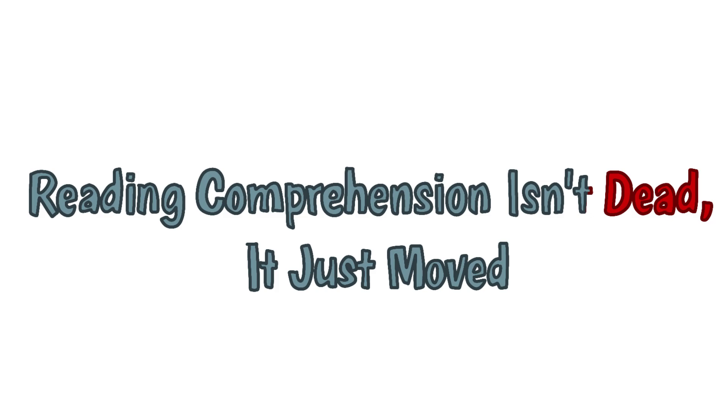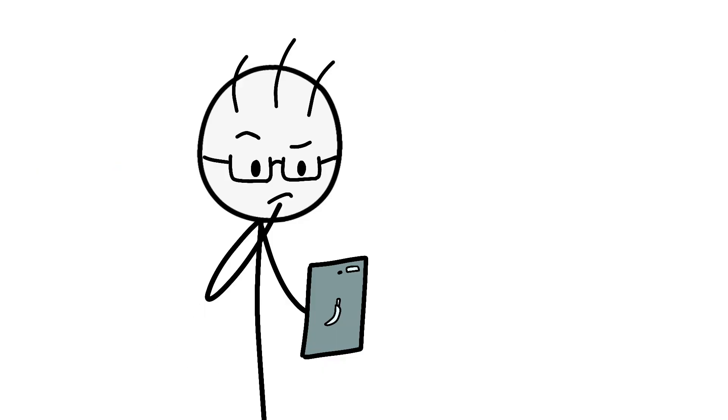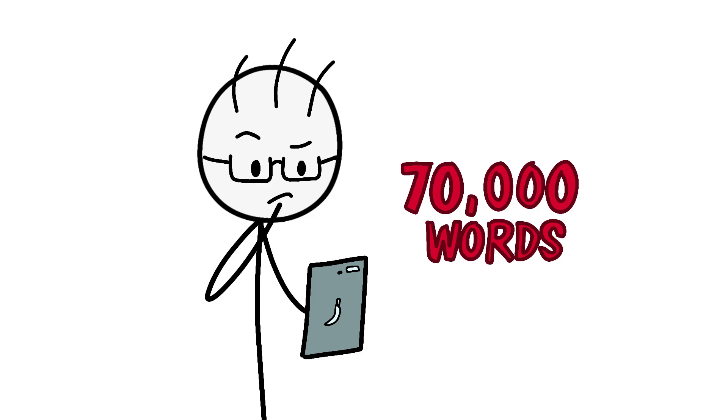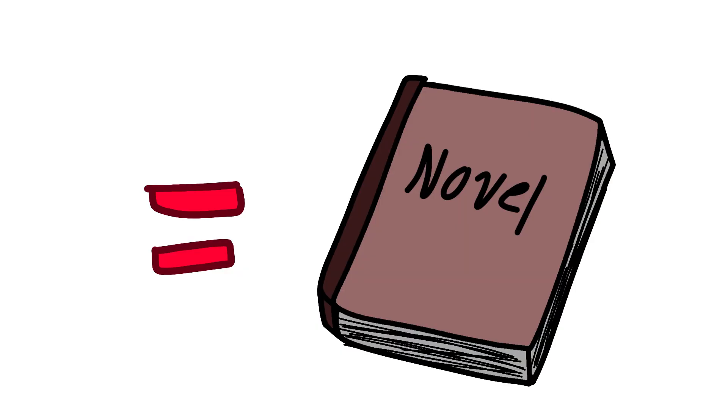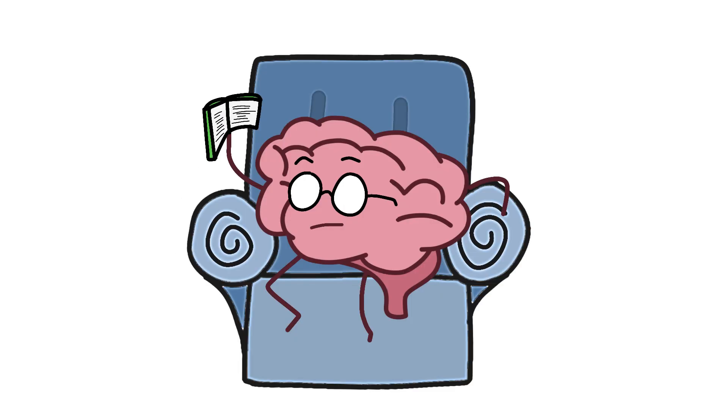Reading comprehension isn't dead, it just moved. Kids don't read anymore. Meanwhile, the average teenager reads 70,000 words per day through texts, posts, and articles. That's equivalent to a novel every single day. But their brains process this text differently than previous generations processed books.